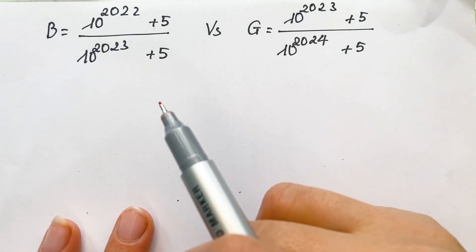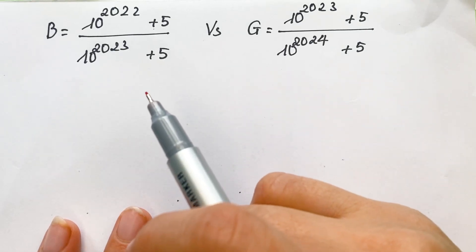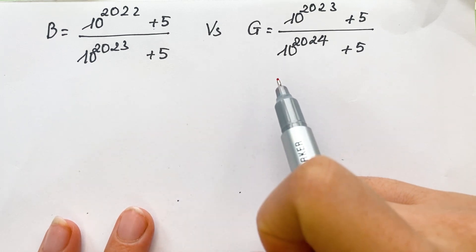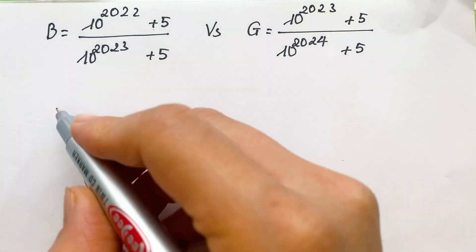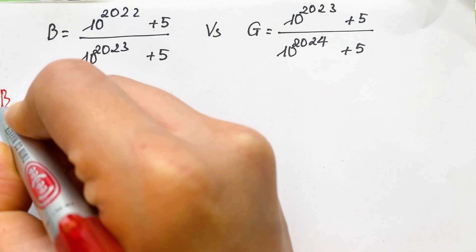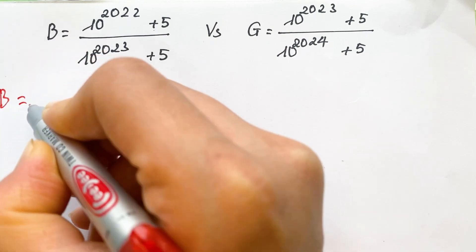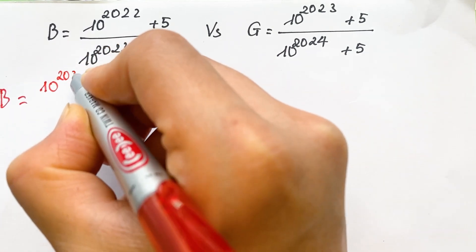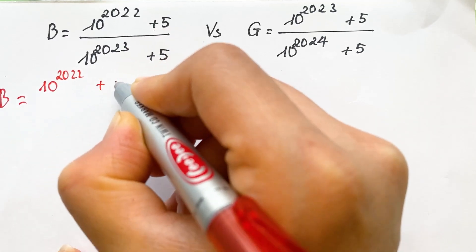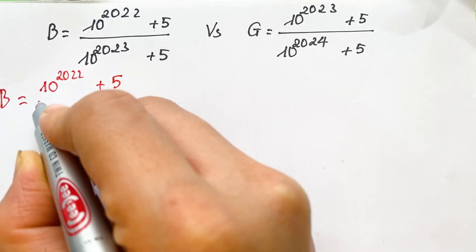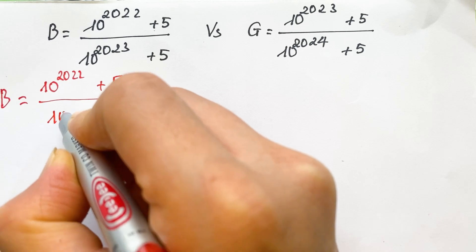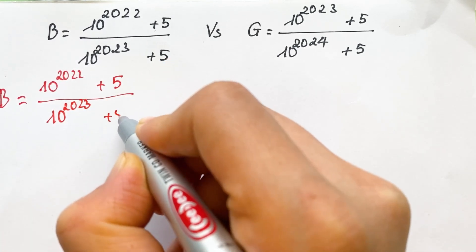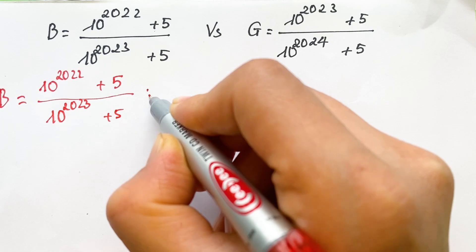Hello, today we are going to compare the expression B with the expression G. We can write B equals 10 power 2022 plus 5 over 10 power 2023 plus 5.